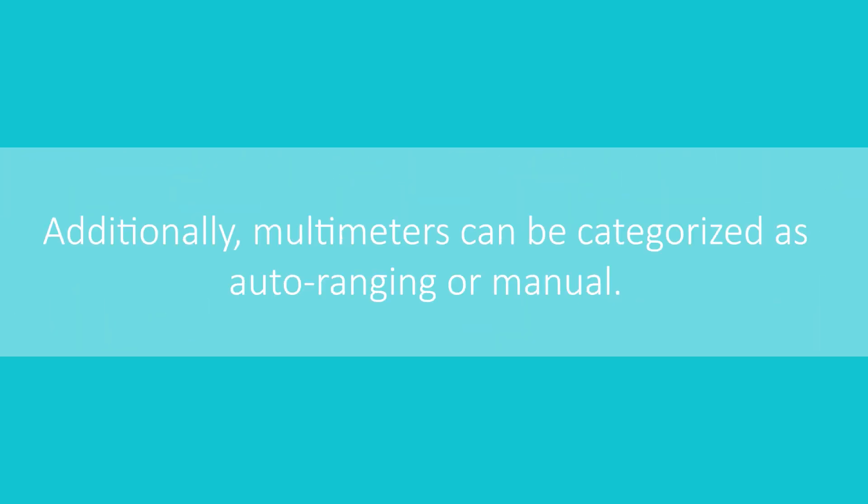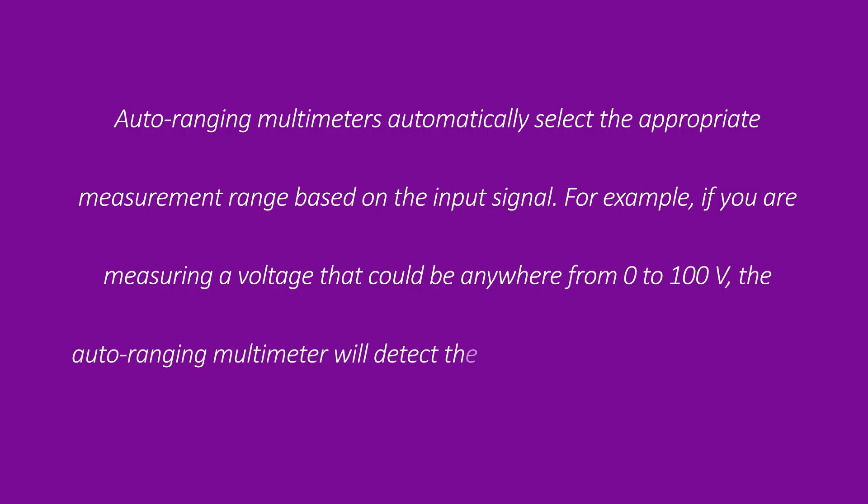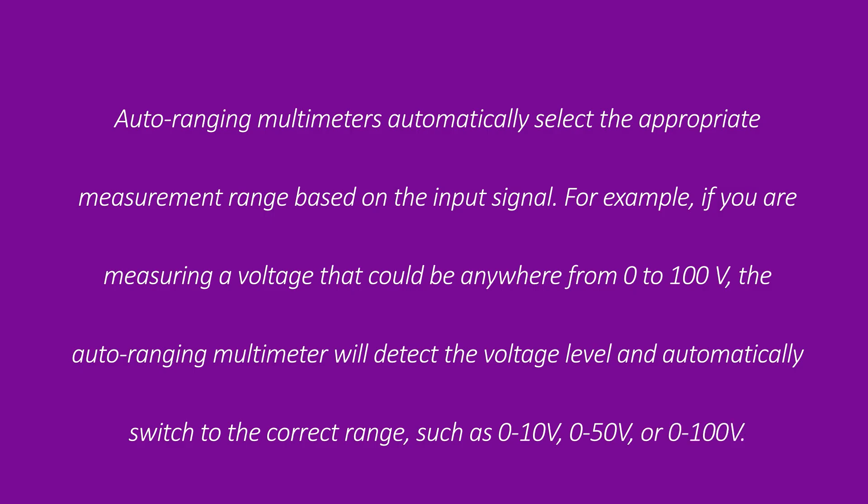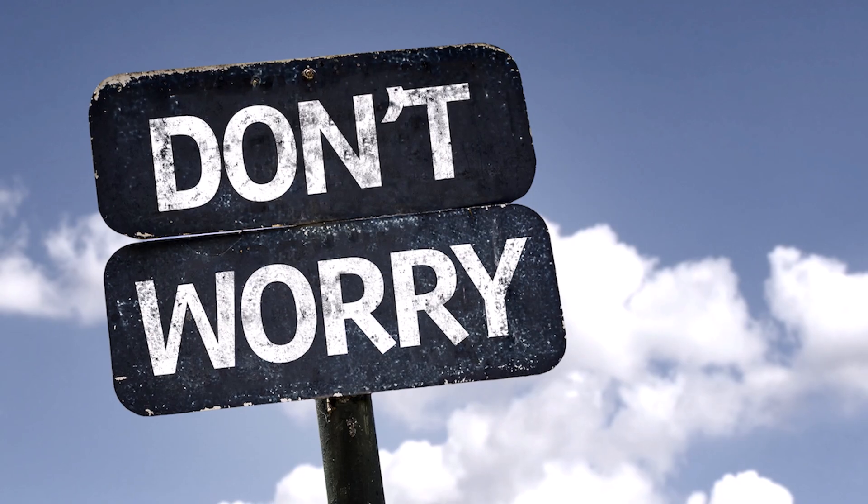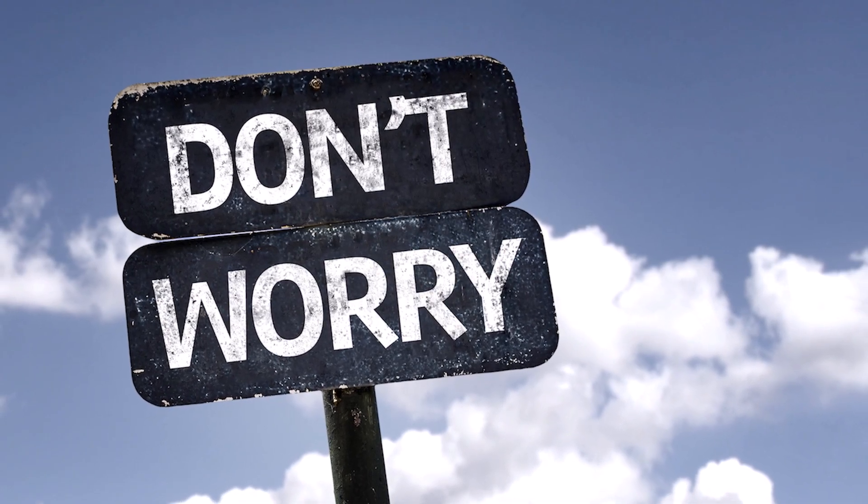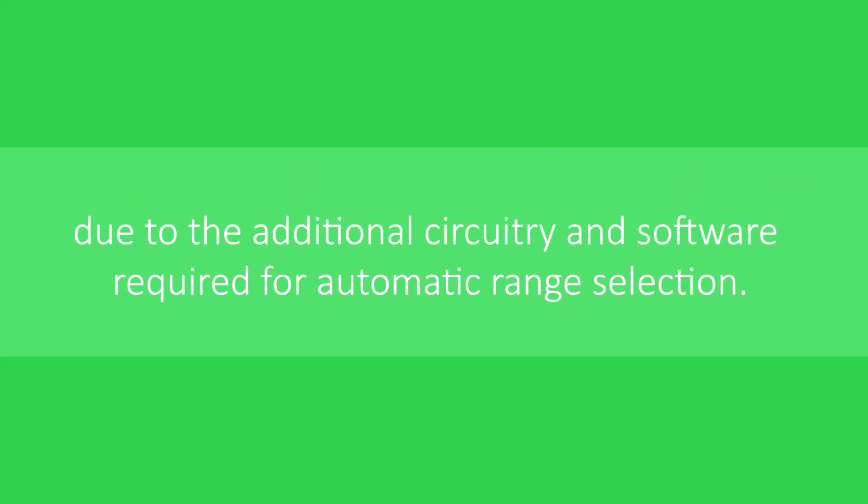Auto-ranging multimeters automatically select the appropriate measurement range based on the input signal. For example, if you are measuring a voltage that could be anywhere from 0 to 100 volts, the auto-ranging multimeter will detect the voltage level and automatically switch to the correct range, such as 0 to 10 volts, 0 to 50 volts, or 0 to 100 volts. This makes auto-ranging multimeters very user-friendly, especially for beginners, as you don't need to worry about selecting the correct range manually. However, they are typically more complex and expensive due to the additional circuitry and software required for automatic range selection.